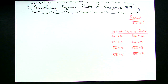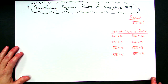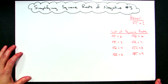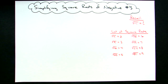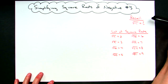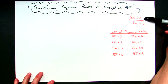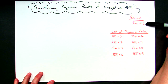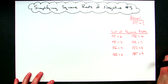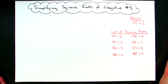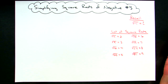Today we're going to do some examples simplifying square roots of negative numbers. Before we get started, we need to recall that the square root of negative 1 is i. Anytime you're simplifying square roots by hand, not putting them in a calculator, it helps to have your list of perfect square roots.